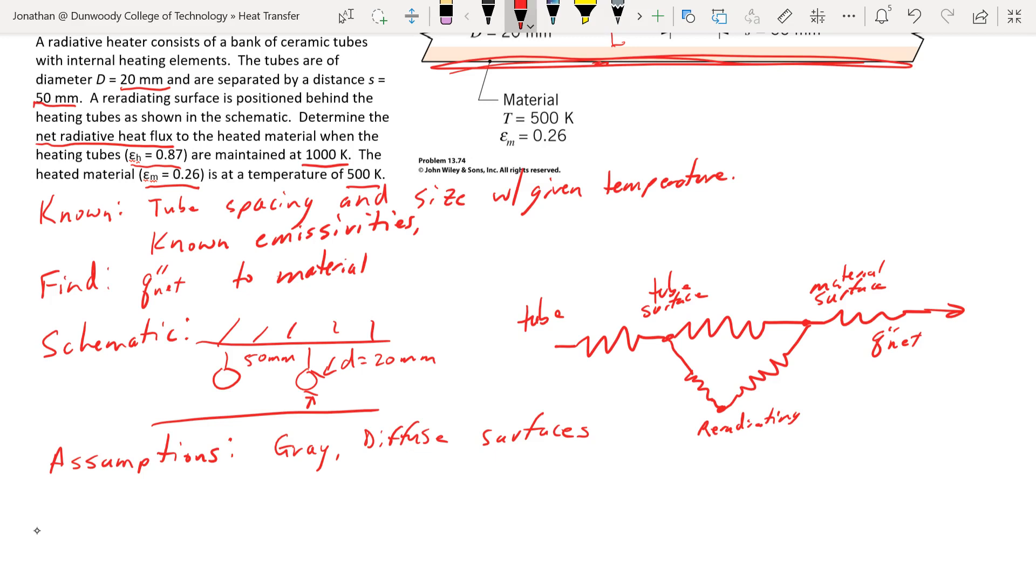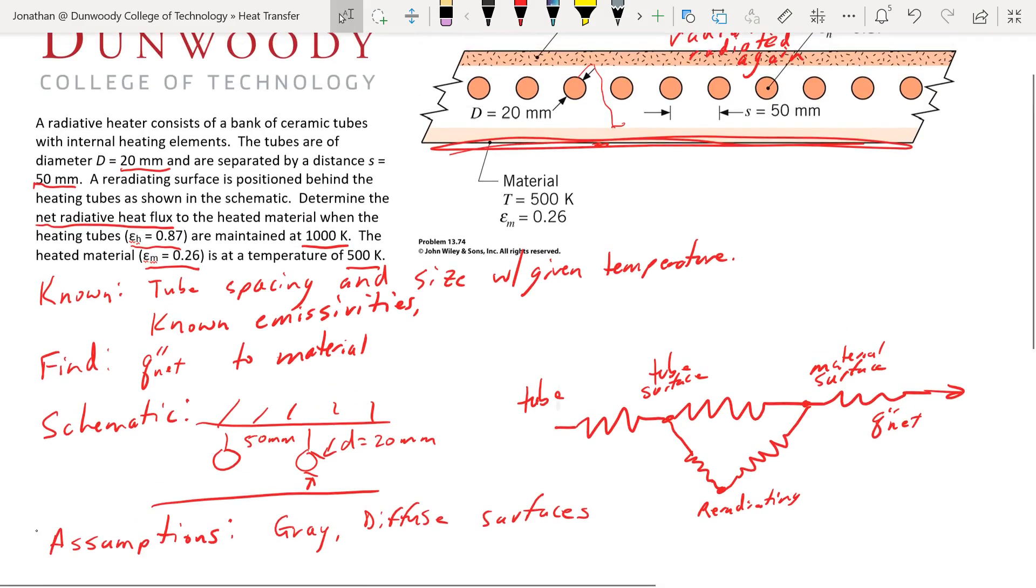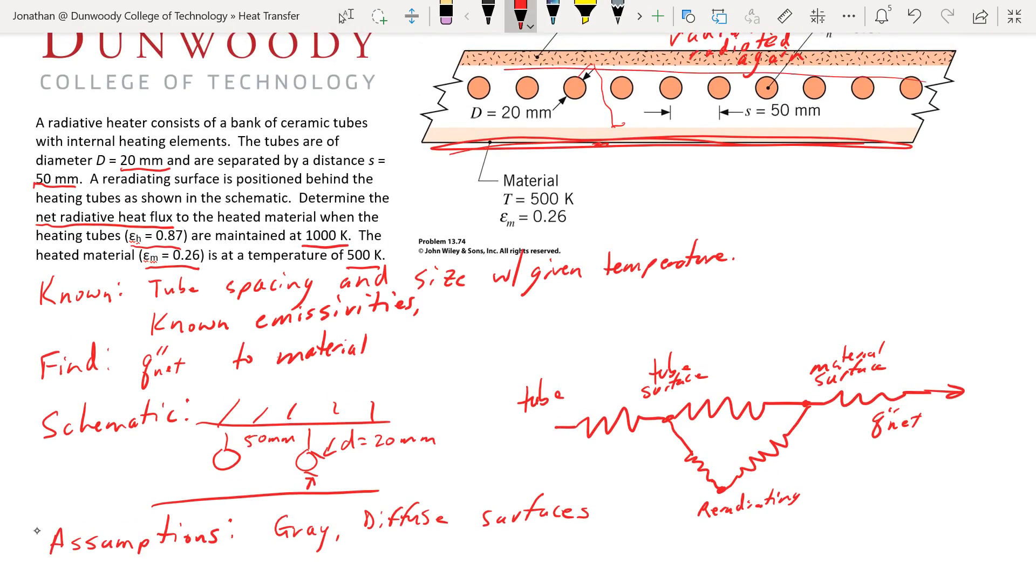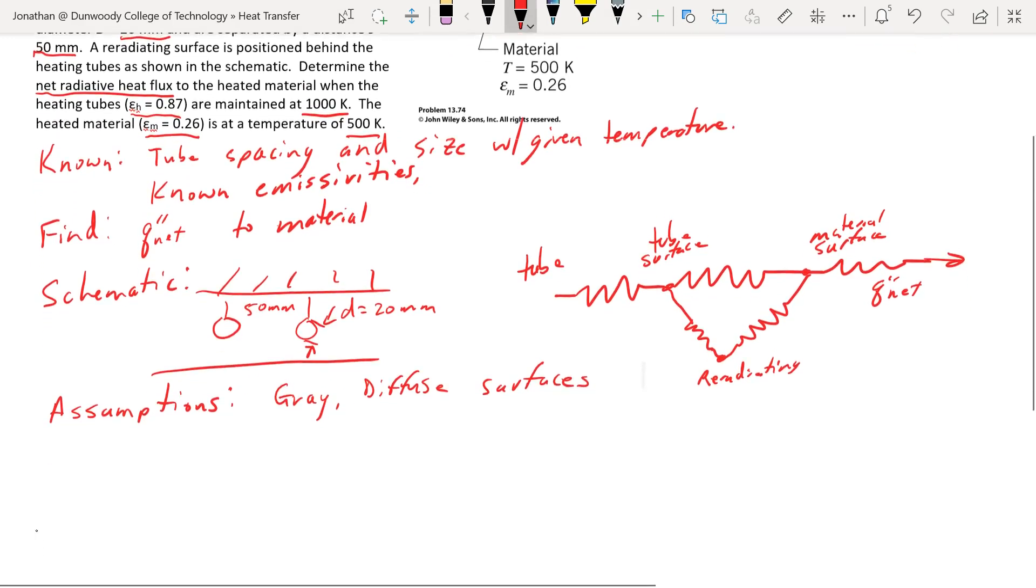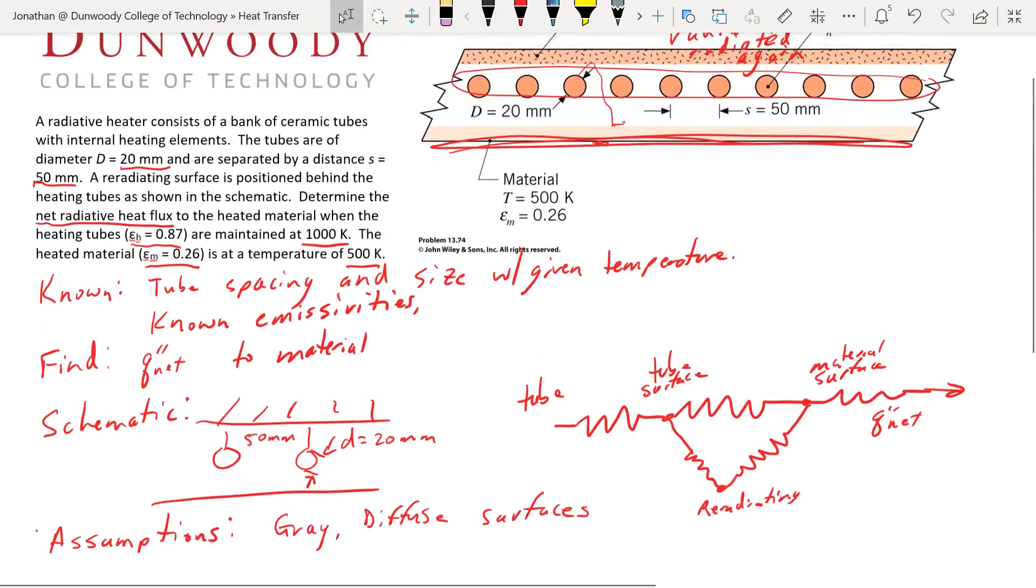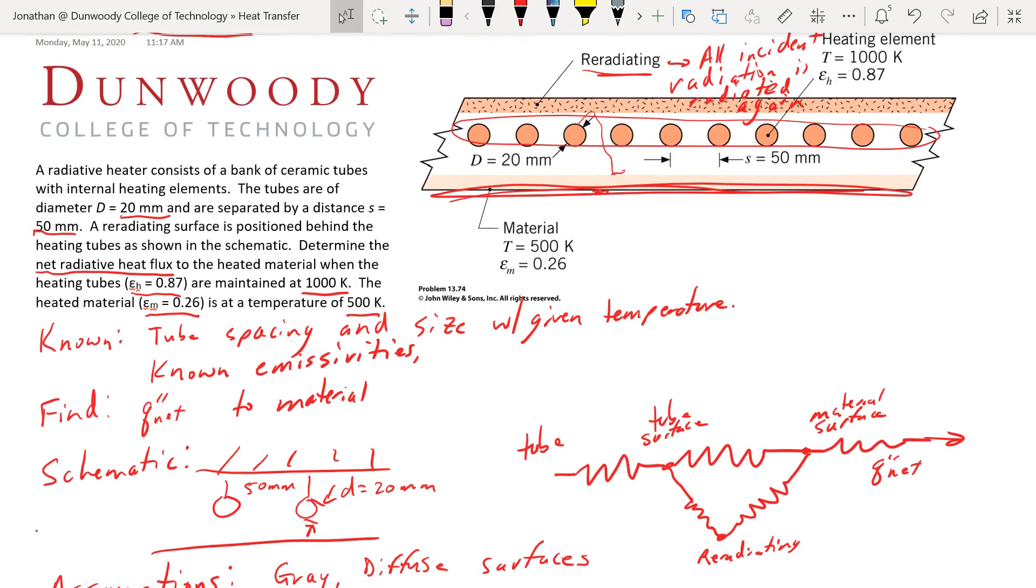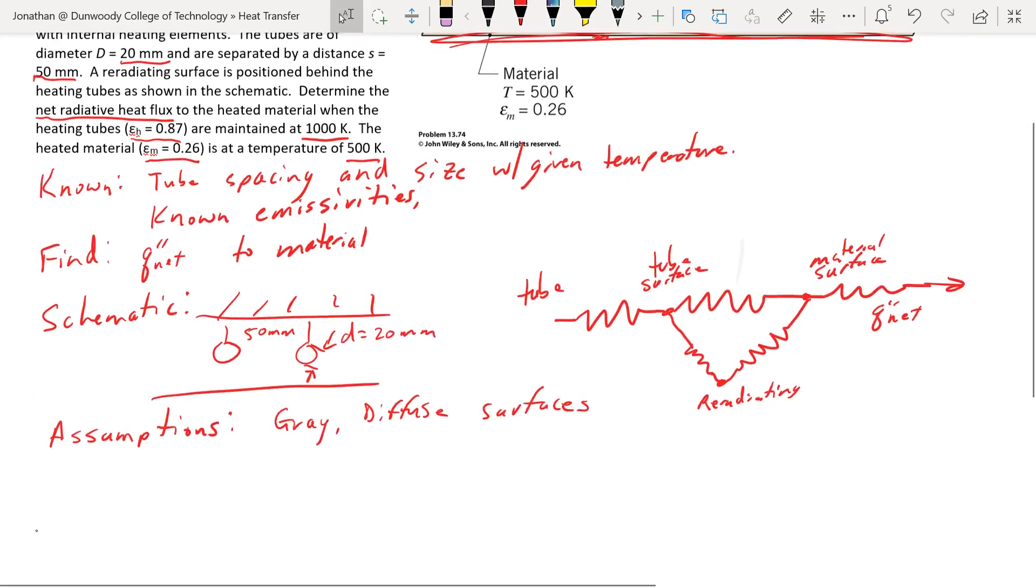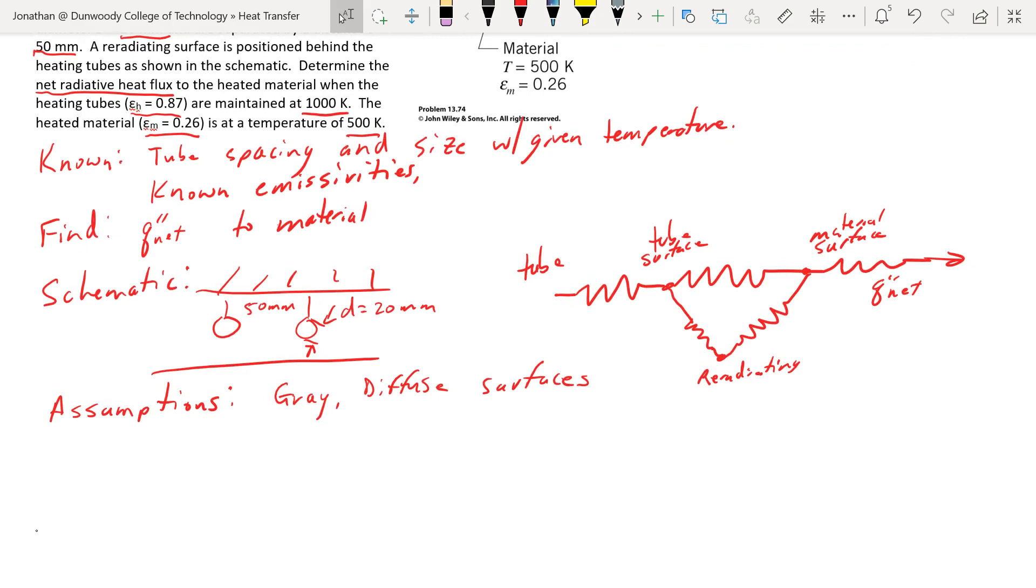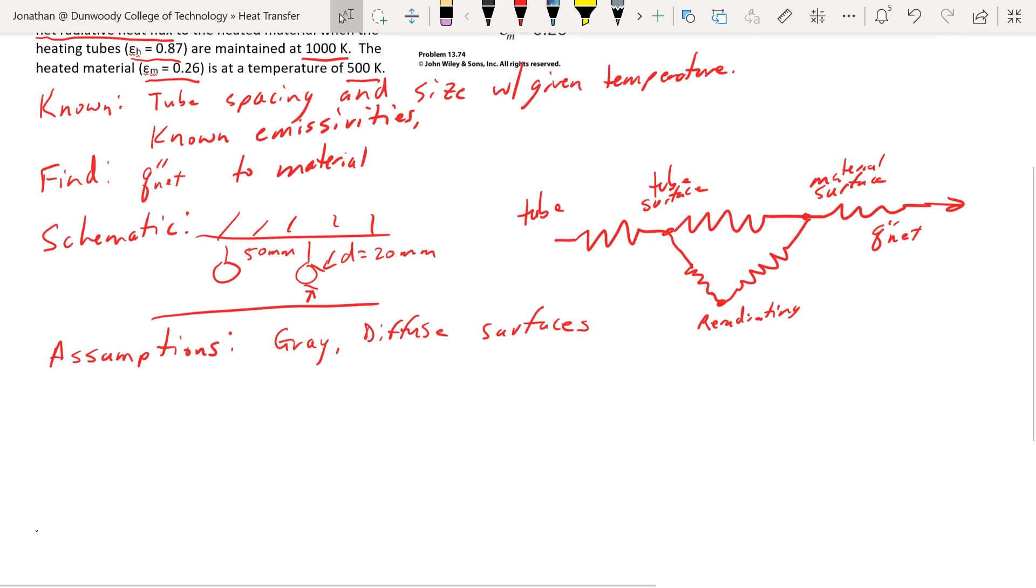So as we look at this, if we group all of these tubes together, we really have essentially a two surface enclosure here, because this back wall is basically just a reflection. So we really only have surface one and surface two. Looking back in our text, let's get our analysis heading up here.